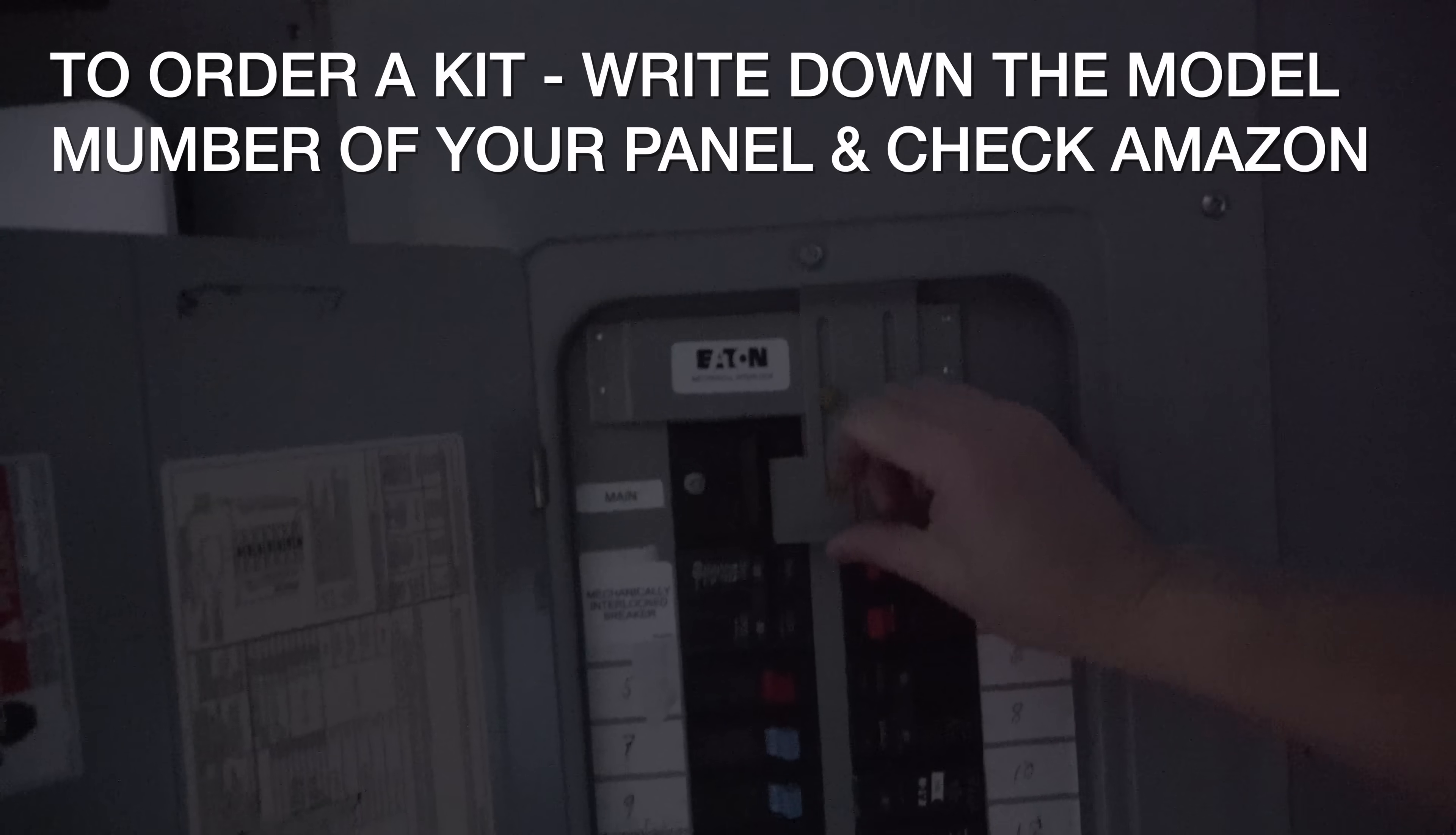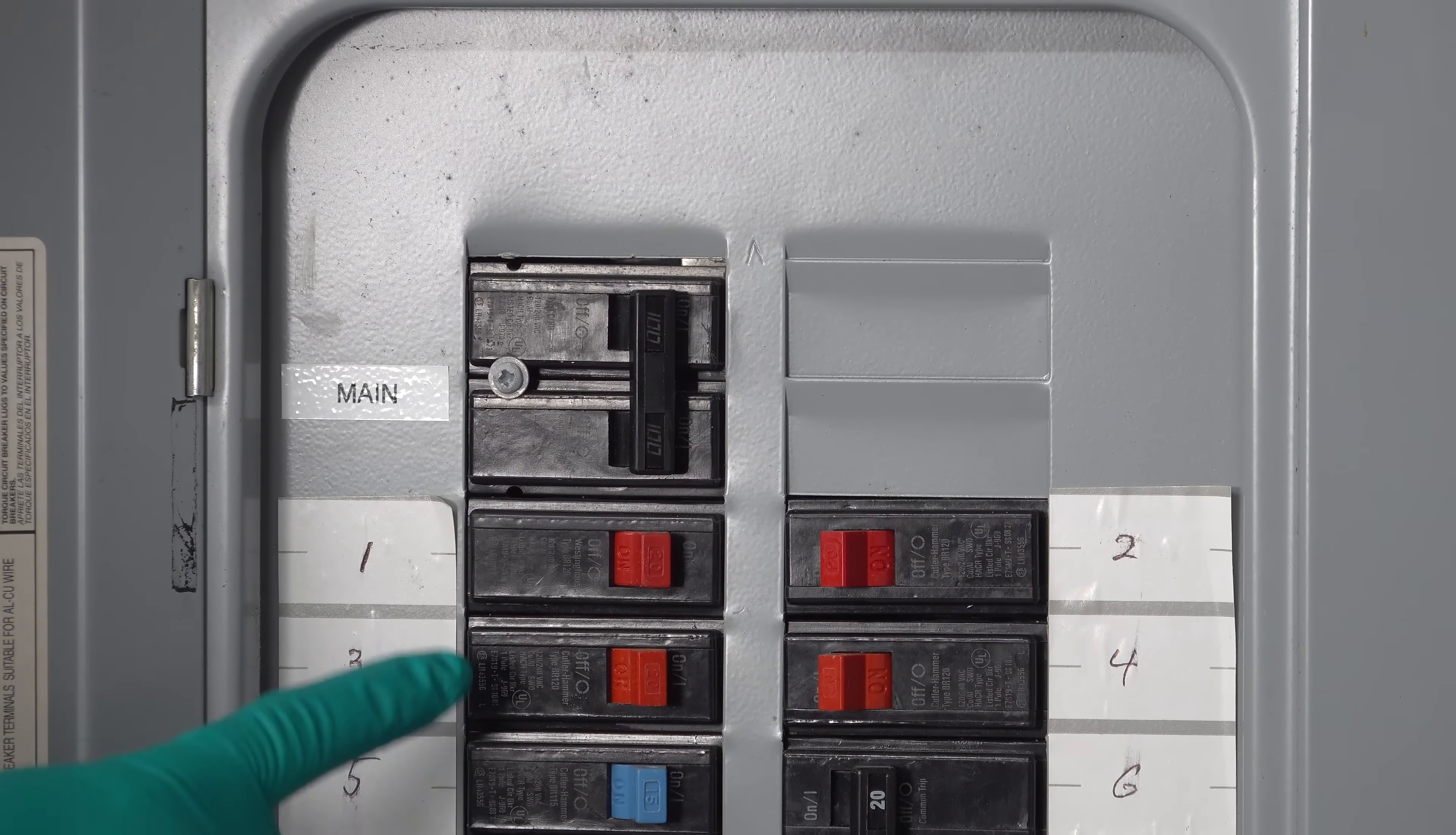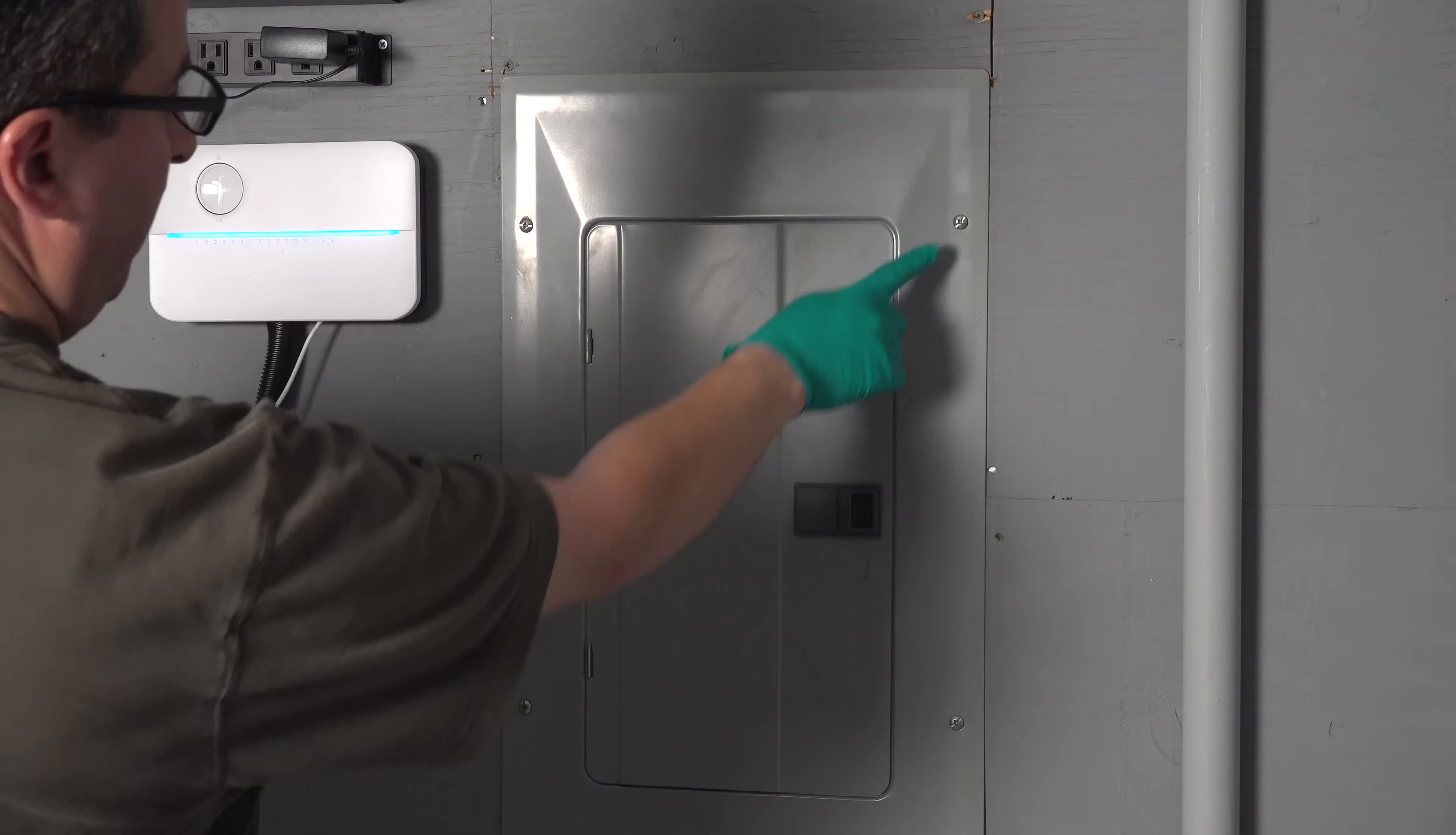But here's where many people get into trouble. You do need a specific location for the interlock kit. It has to generally be next to your main circuit breaker so that the mechanical levers can work. Your directions will tell you precisely which locations you need. This kit requires the two spots just below my main breaker to be open. But just like your panel at home, you're likely to already have circuit breakers in those positions, so we need to make some changes to make sure this thing can fit.